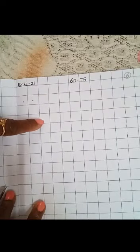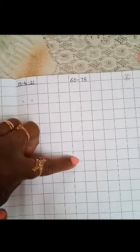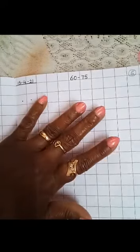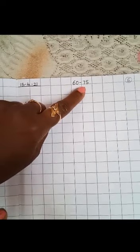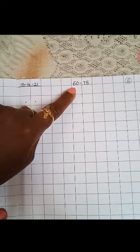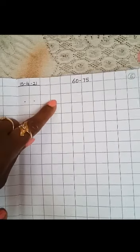60, 61, 62, 63, 64, 65, 66. Then you have to leave one box. 67, 68, 69, 70, 71, 72, 73. Then leave one box. 74 and 75. When 75 comes you have to stop. You have to start from 60. Is that clear?